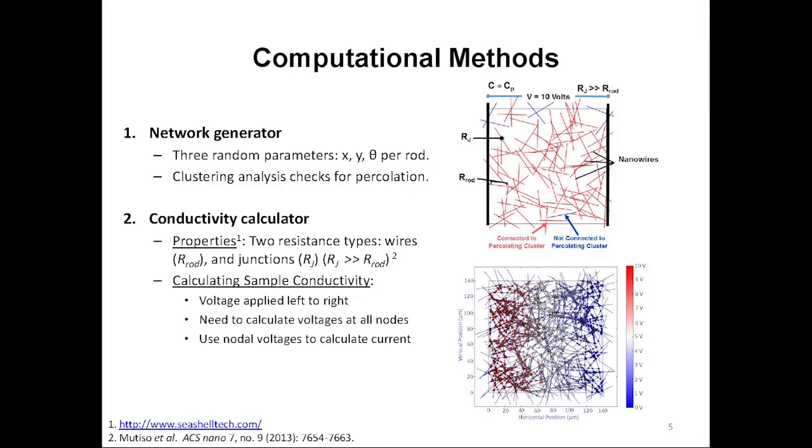In order to investigate this effect in the most systematic way possible, I chose to develop my own computational model. The computational model I developed is split into two main portions. The first portion is a network generator, which creates a network of randomly placed and oriented line segments in 2D space. Three random parameters are created to generate each rod: an X coordinate and a Y coordinate of the center point, as well as an orientation theta. After calculating all intersections between nanowires, this portion of the program performs a clustering analysis to determine if a connected path exists across the sample. This determines if the sample has zero or non-zero conductivity. If it has non-zero conductivity, we move on to the second part of the model to calculate the exact value.